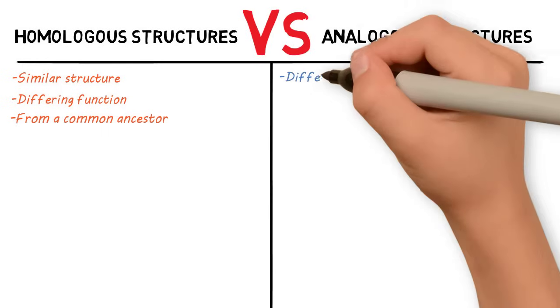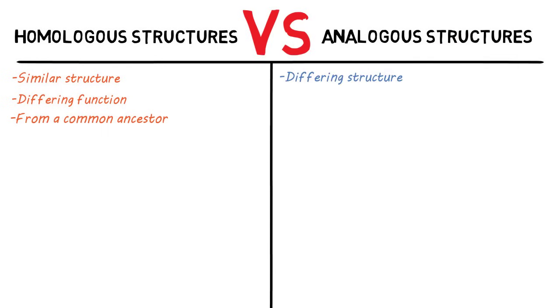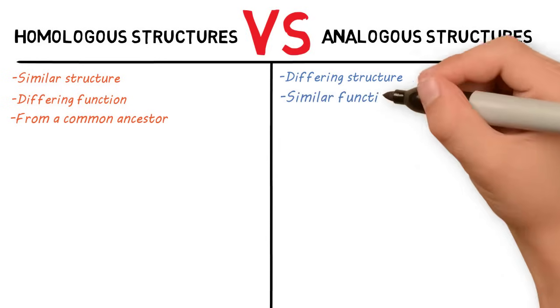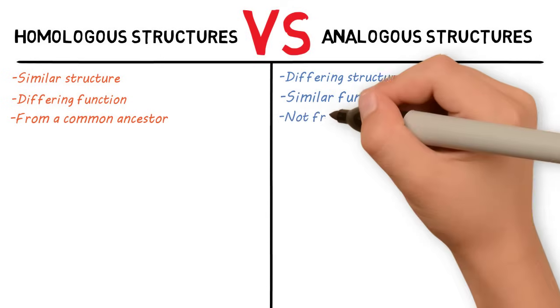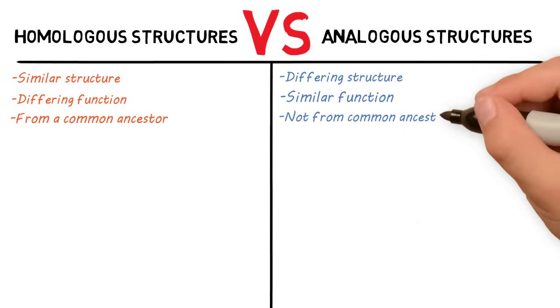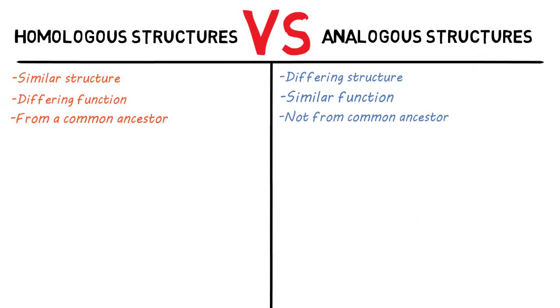Analogous structures, on the other hand, have a differing structure, so they do not have a similar anatomy. But they do share a similar function — wings, fins, things like that. And they do not form from a common ancestor.